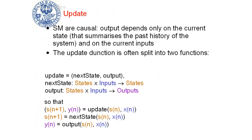For convenience, the update function is often represented as two different functions. One is the state update or next state function — given the current state and current set of input values, it gives you the next state. The other is the output update function — given the current state and current set of inputs, it gives you the set of outputs.